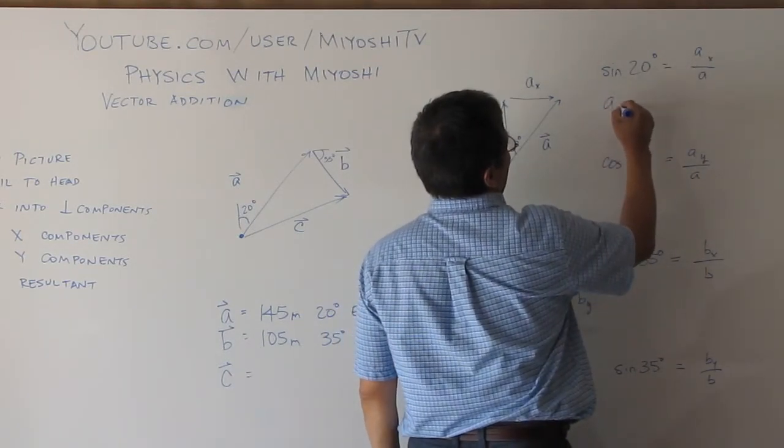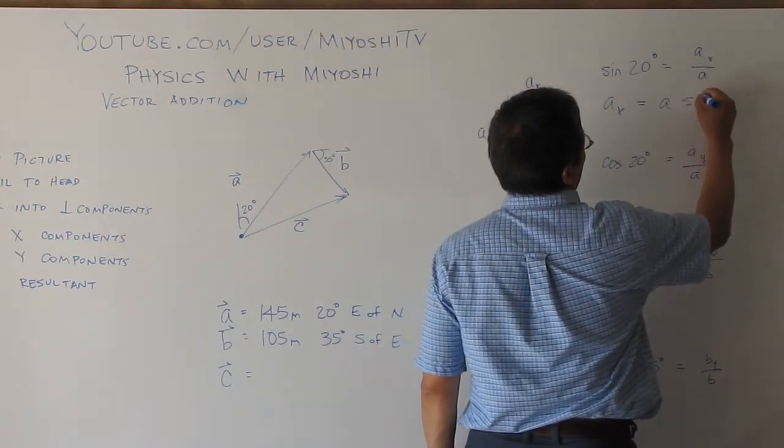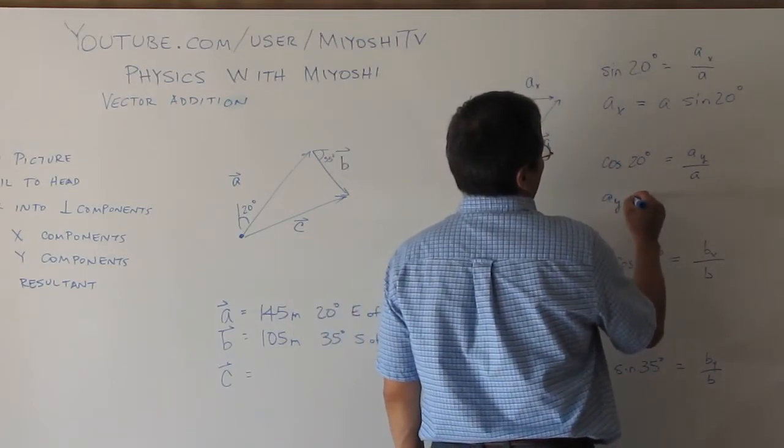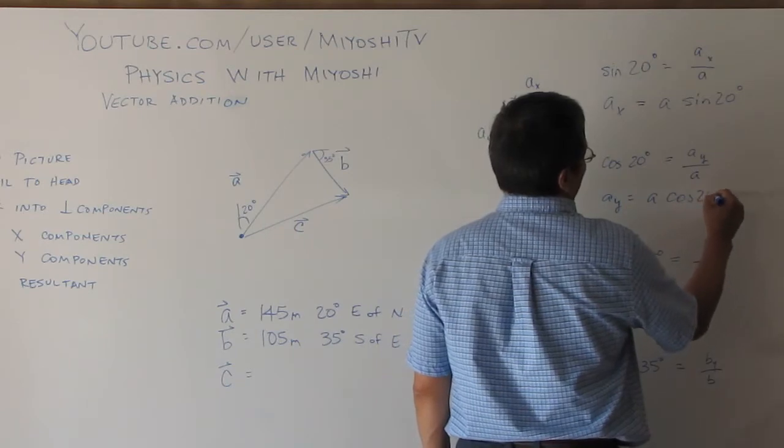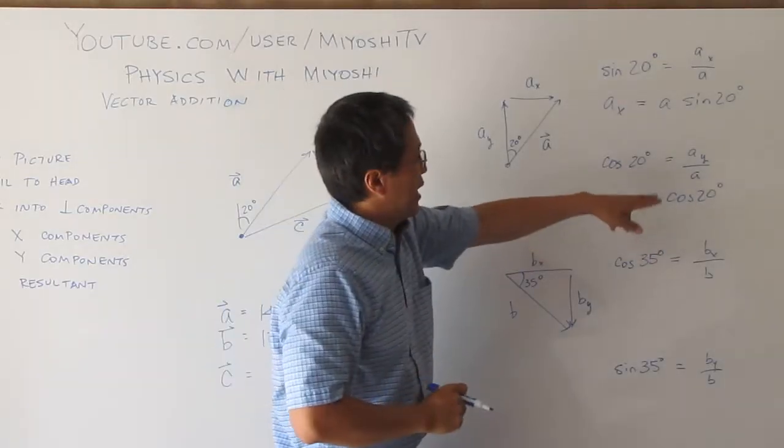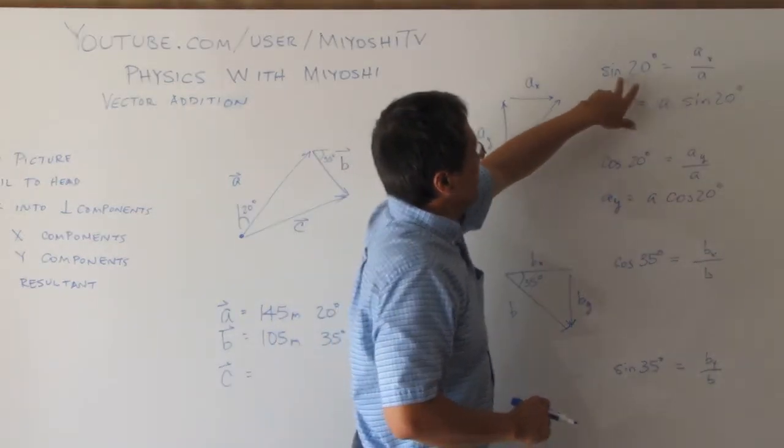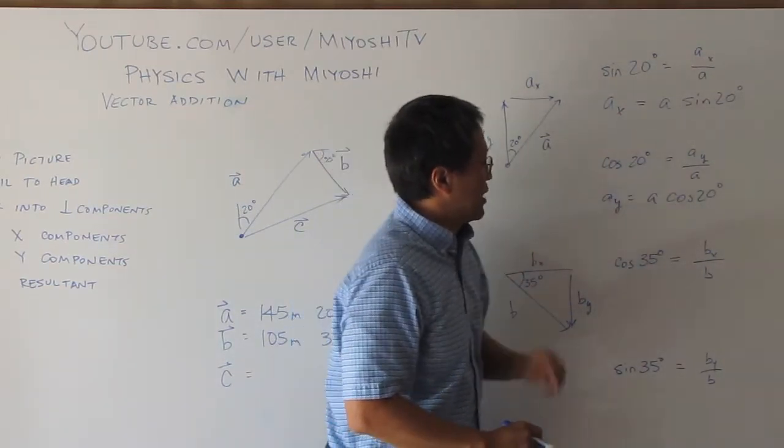And ay is a times the cosine of 20 degrees. Now, don't get just used to saying that ax is always going to be the sine of 20 times a and that the ay is always the cosine of 20 times a.